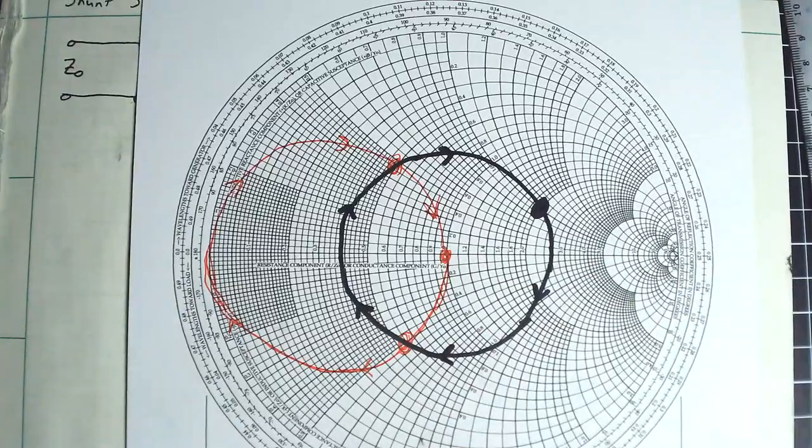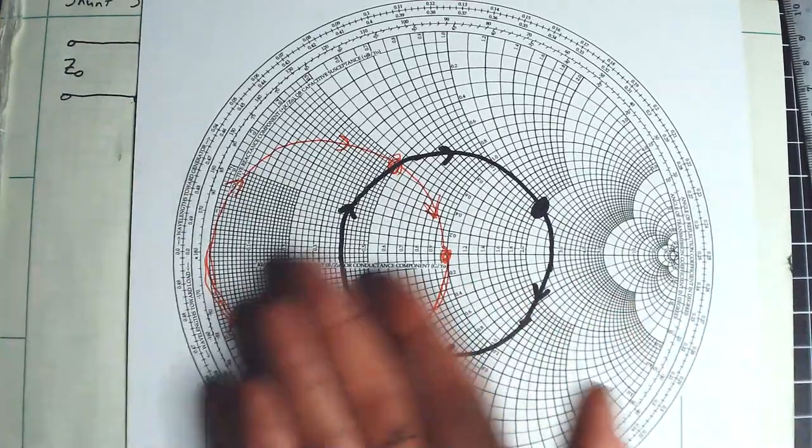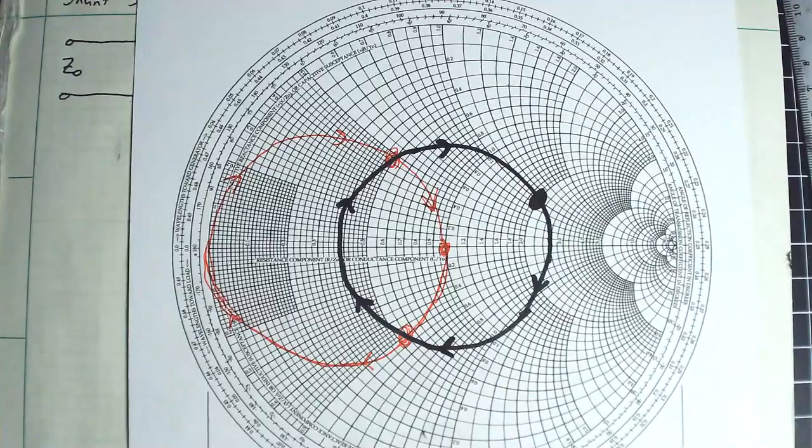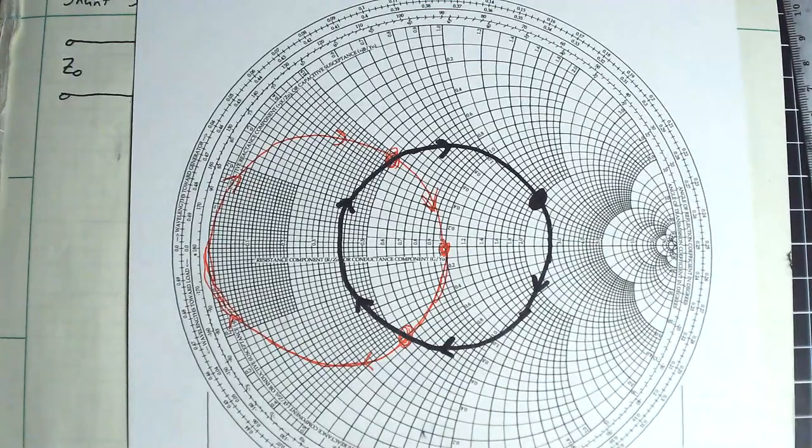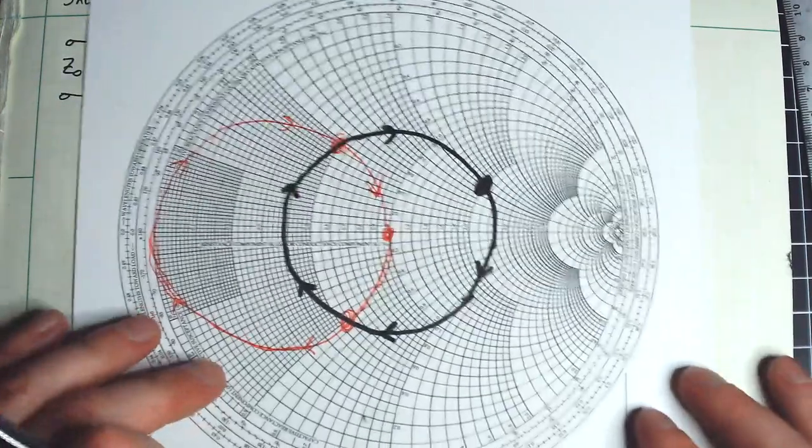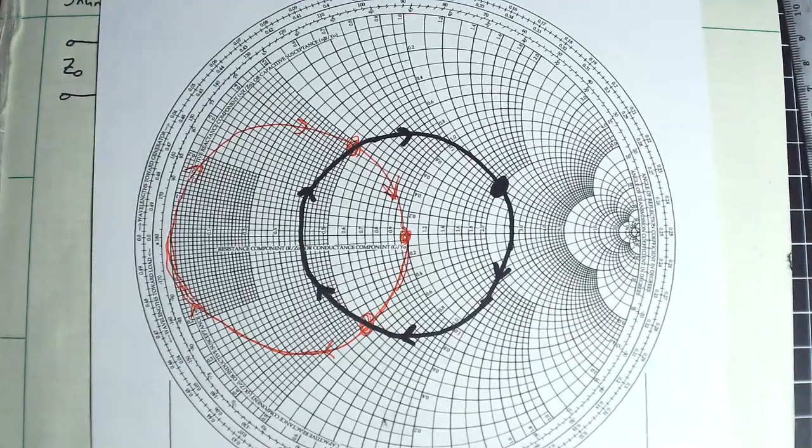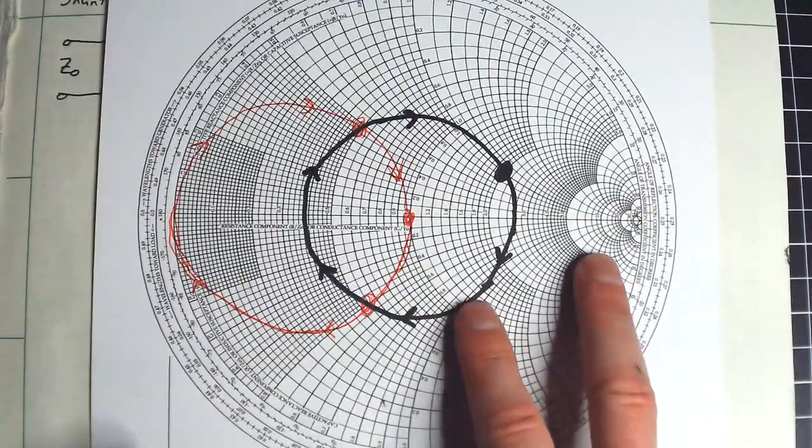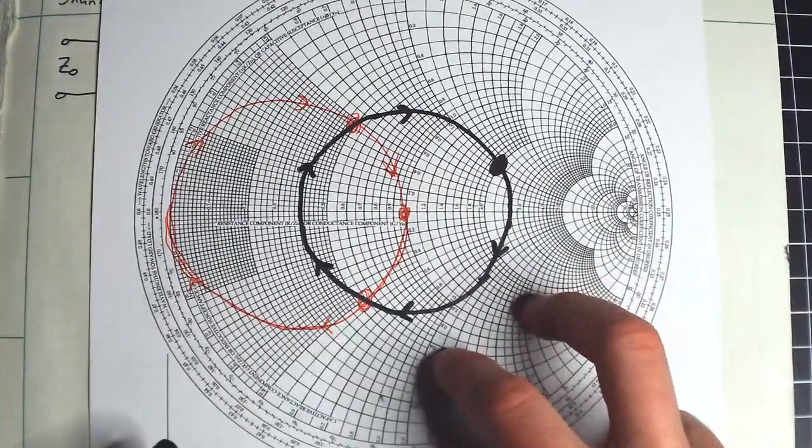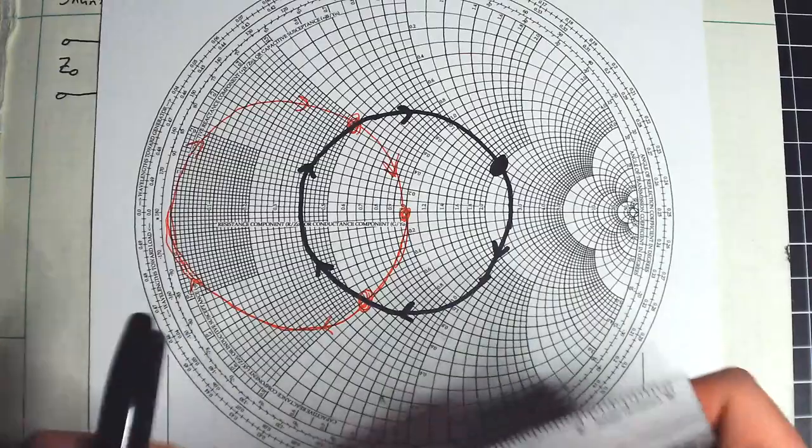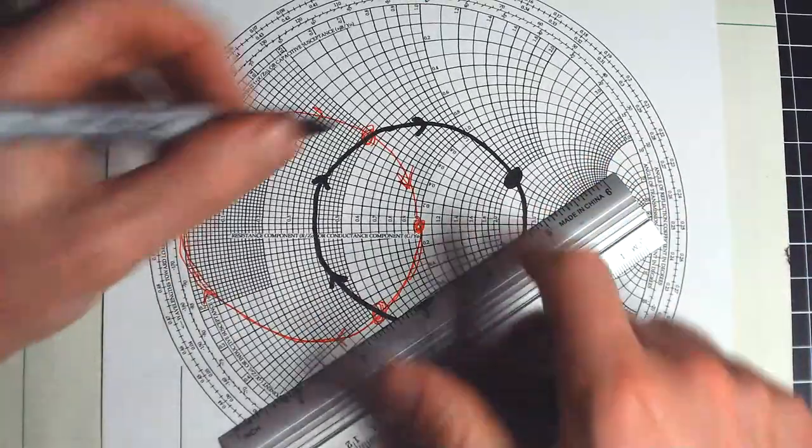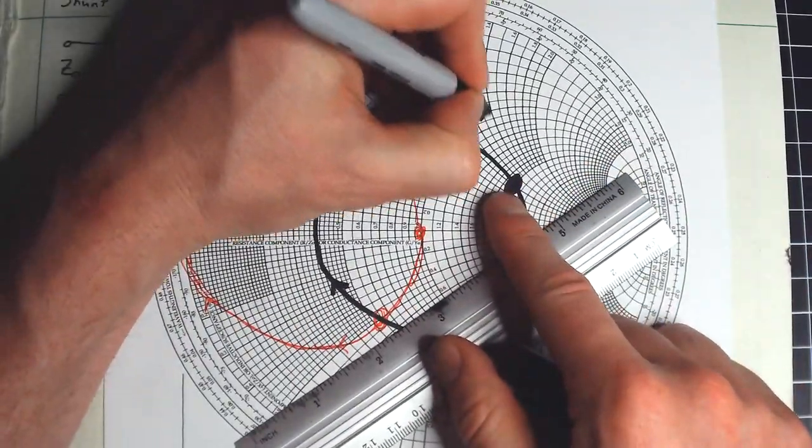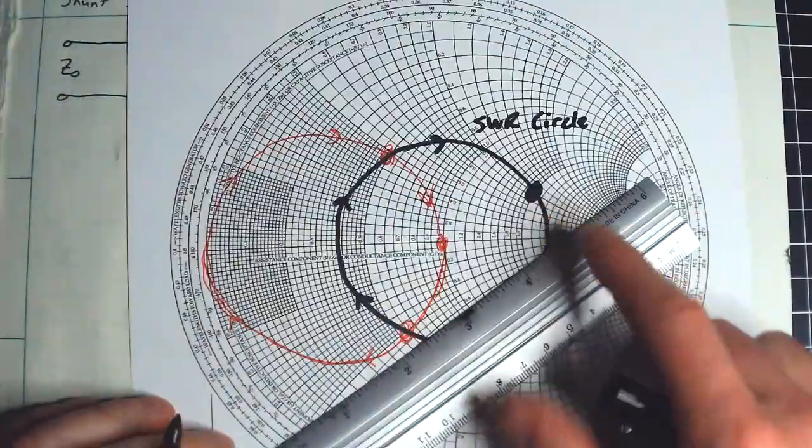However, we don't really have admittance circles. And if you tried to plot a bunch of admittance circles on top of the reactance circles, you would get a giant gobbledygook mess. So there's a very simple trick you can do with the Smith chart to turn all of these impedance circles into admittance circles. By the way, this circle here I believe is called an SWR circle. Keep that in mind.